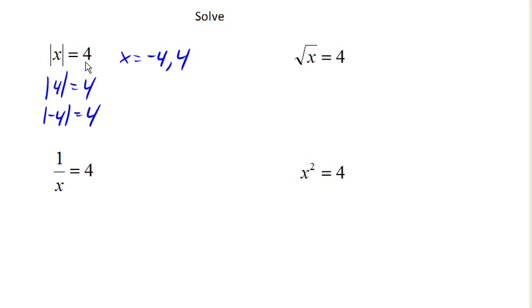When we solve an absolute value equation, the input can always be either positive or negative, so that the absolute value gives us a number, in this case, 4.